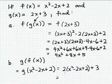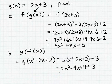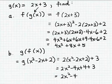Distributing the coefficient 2 gives 2x squared minus 4x plus 4, plus 3. Adding the constant terms together, we end up with 2x squared minus 4x plus 7. That's the final result for g of f of x.